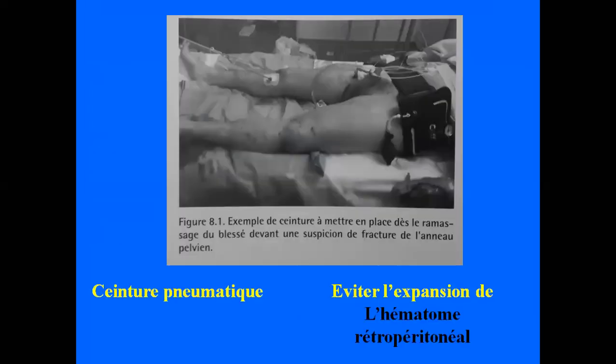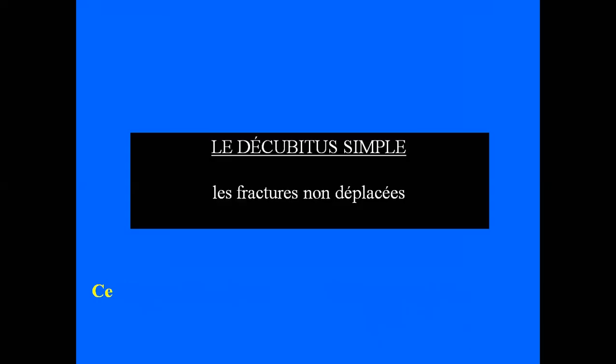Chez des équipes spécialisées, au lieu d'un drap, on peut utiliser une ceinture pneumatique — ressemblant à un brassard de tensiomètre — que l'on met autour des deux os coxaux et que l'on gonfle. Cela permet de rapprocher les deux os, diminuer le saignement, réduire l'hématome rétropéritonéal et conserver un bon état hémodynamique.